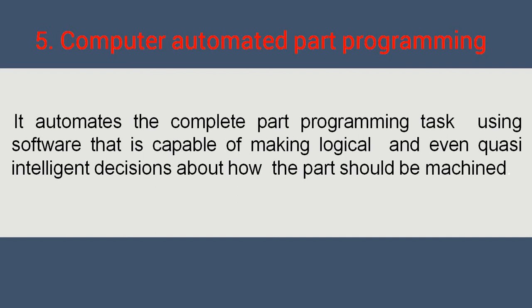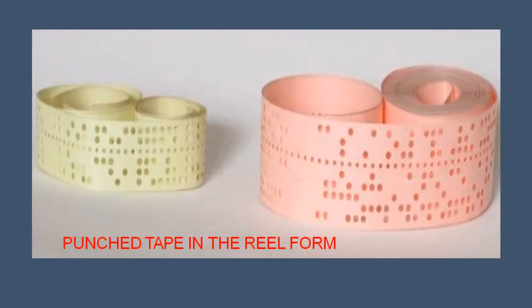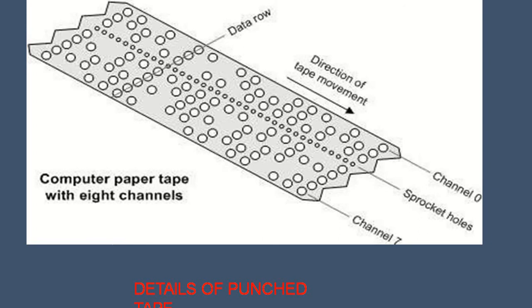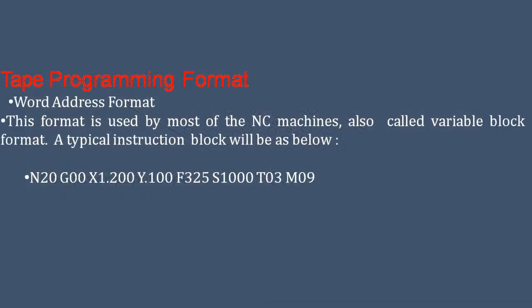The last type is computer automated part programming, which automates the complete part programming task using software capable of making logical and even intelligent decisions about how the part should be machined. You can see the picture related to the punched tape. In real form, if the tape has a problem the entire tape must be re-punched, which is difficult. The computer paper tape has eight channels, with data rows and direction of tape movement, and each punched hole in the sprocket channel has a correlated machine function.